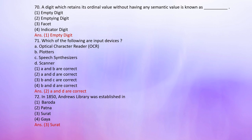Number 71: Which of the following are input devices? A. Optical Character Reader (OCR), B. Plotters, C. Speech synthesizers, D. Scanners. Options: 1. A and B, 2. A and D, 3. B and C, 4. B and D. The correct answer is 2: A and D are correct.